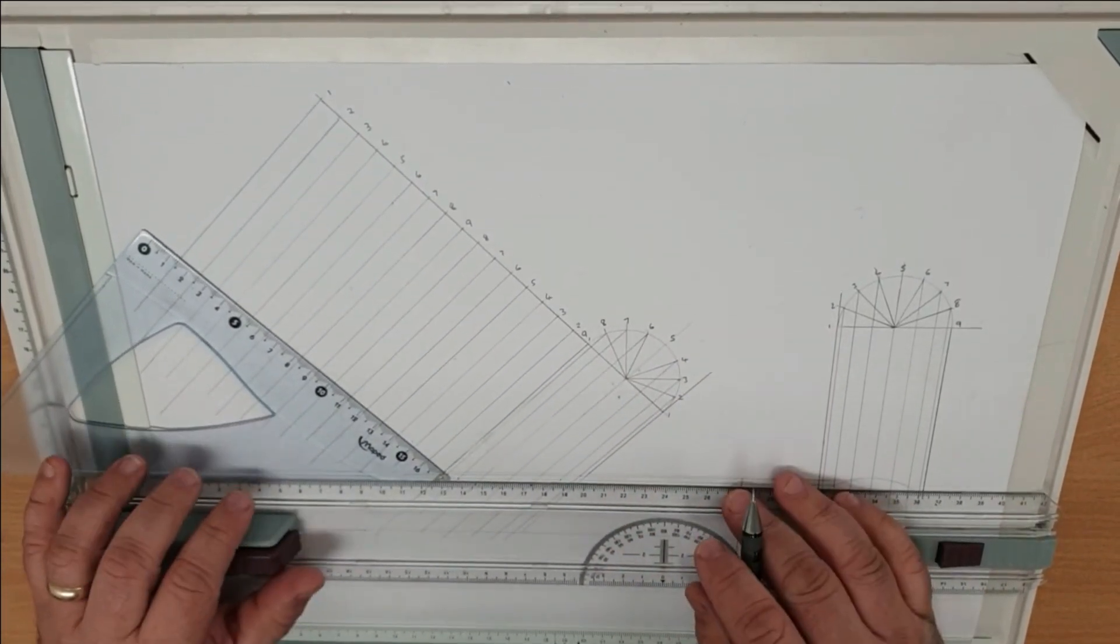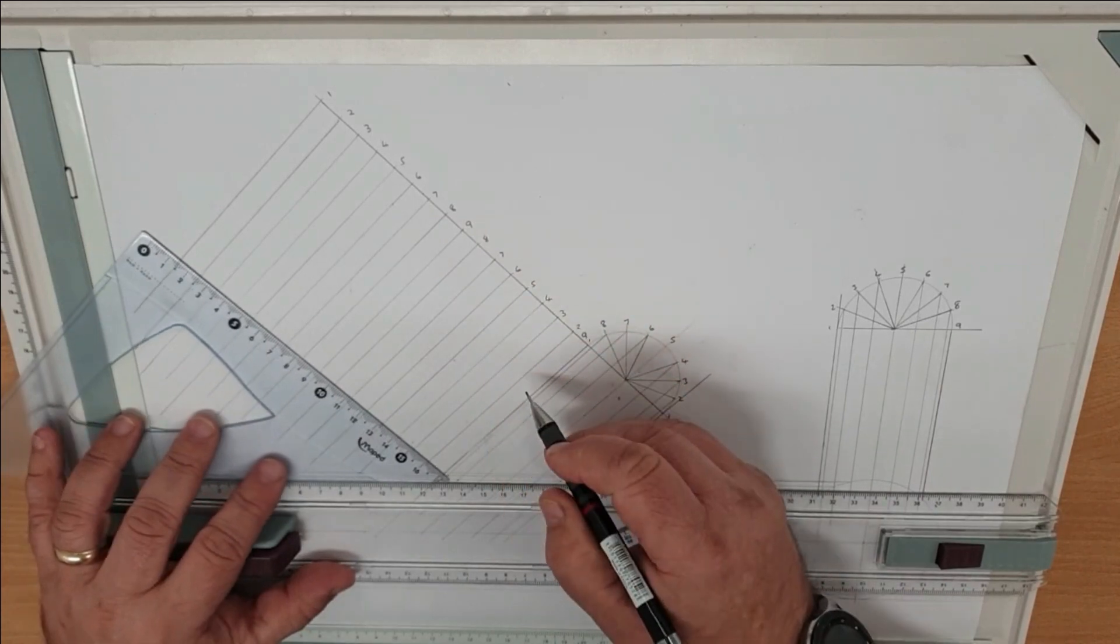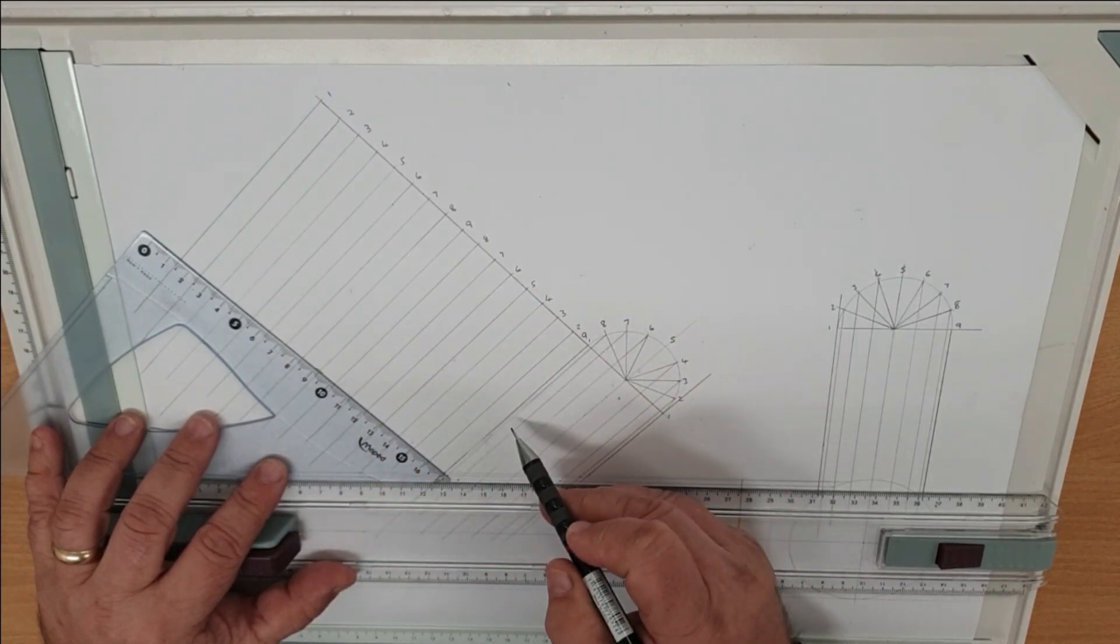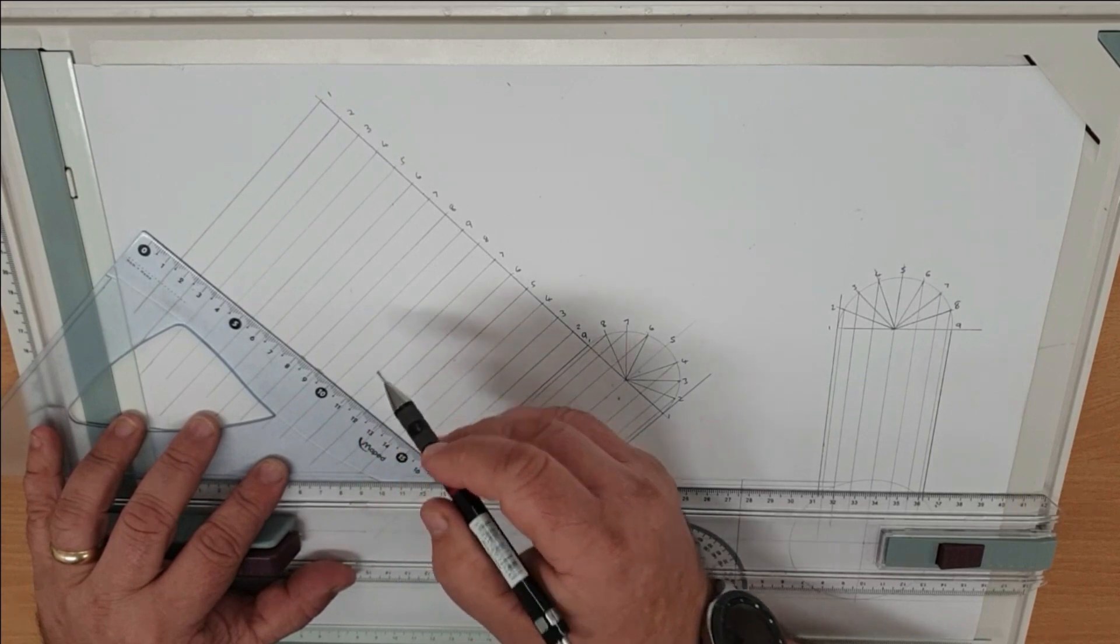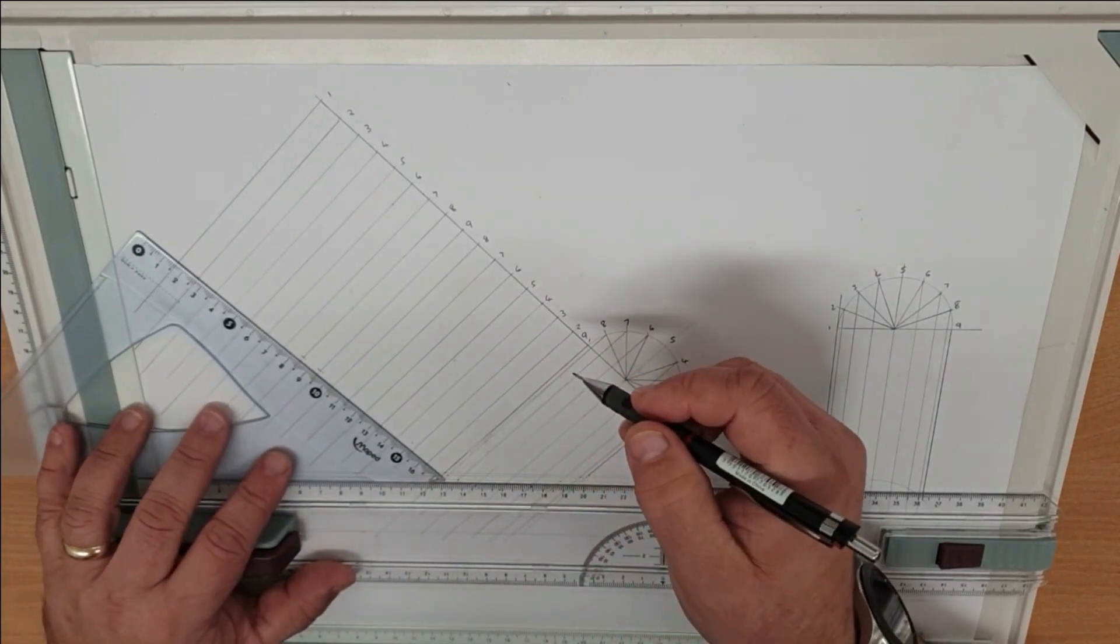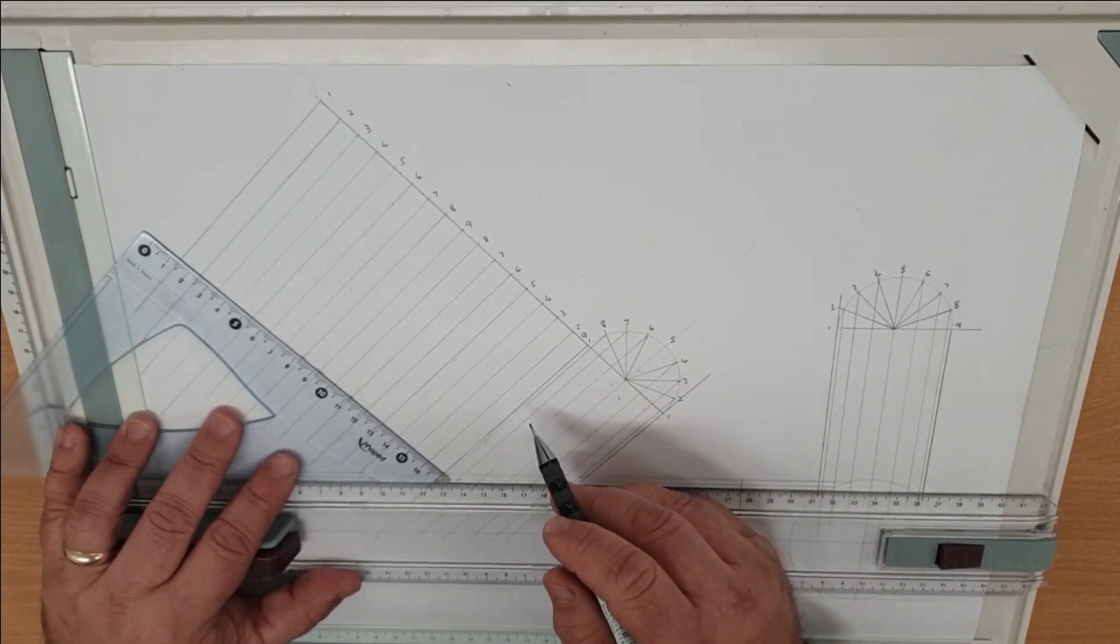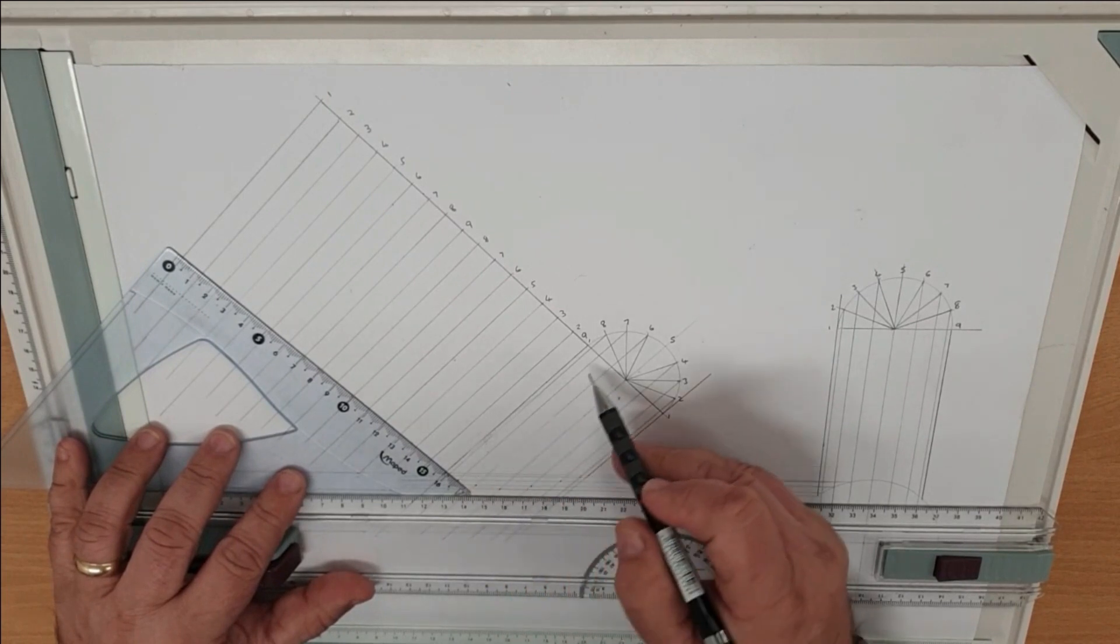So then starting with the center of our pattern, pull that point. Drop down to the next one. It's not a mistake there. It's one of the reasons that we number it, so that we don't get confused because there's quite a lot of lines on this pattern. We move down to our next point.